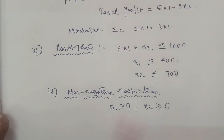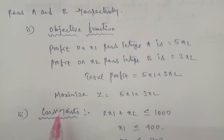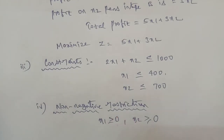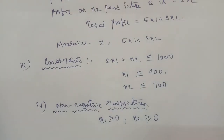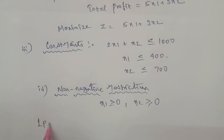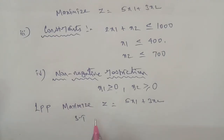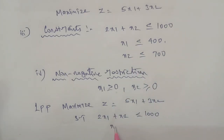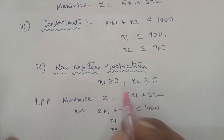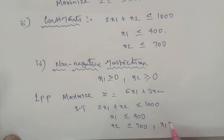So now we have all 4 steps ready: variables, objective function, constraints, and non-negative restriction. Therefore, the complete linear programming problem is: Maximize Z = 5x1 + 3x2, subject to constraints: 2x1 + x2 ≤ 1000, x1 ≤ 400, and x2 ≤ 700, with non-negative restriction x1 ≥ 0 and x2 ≥ 0.